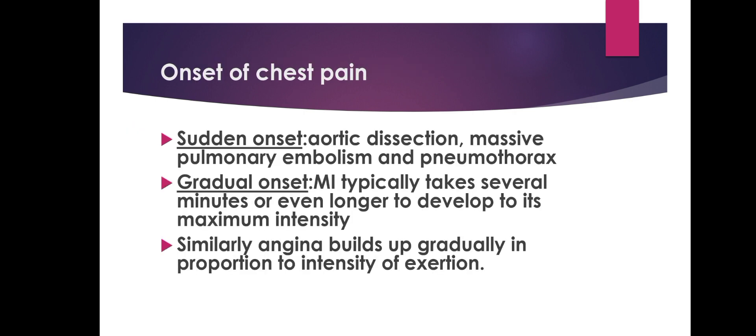Onset of chest pain: a sudden onset can occur in aortic dissection, massive pulmonary embolism, and pneumothorax. Gradual onset occurs in myocardial infarction, which typically takes several minutes or longer to develop to maximum intensity. Similarly, in angina the pain builds up gradually in proportion to the intensity of exertion.